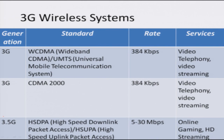This was followed by the 3G revolution, with two competing standards. One is WCDMA, the Wideband CDMA, also known as UMTS or the Universal Mobile Telecommunication System, with data rates around 300 to 400 kilobits per second — a massive increase compared to previous standards. CDMA 2000 has a similar data rate of about 400 kilobits per second. Both support voice calling as well as video calling, where video is transmitted along with voice to the other end.